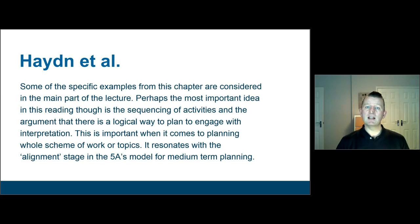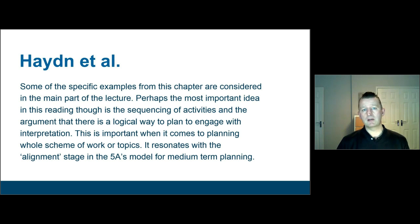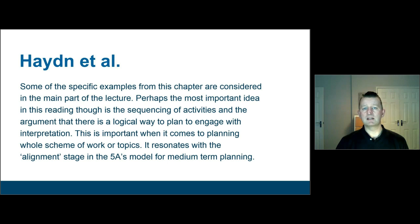This really resonates with the earlier lecture in Educational Studies last term, where I was talking about the alignment stage in the 5As model for medium-term planning. It's important at the outset to articulate what you want to get from this scheme of work, then align the different learning steps so that you move from where students are at the start to where you want them to get to by the end. Then you think of activities, assess them, and adjust your plan in light of that assessment information.